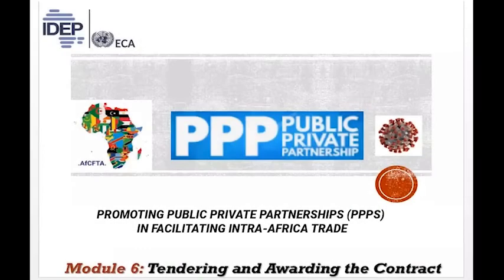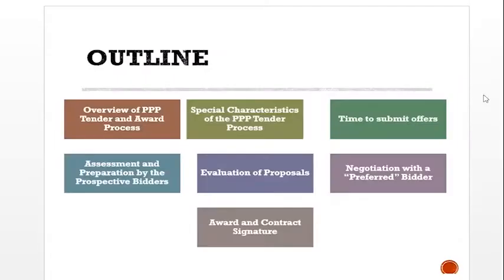Module 6: Tendering and Awarding the Contracts. Outline: Overview of PPP tender and award process. Special characteristics of the PPP tender process. Time to submit offers. Assessment and preparation by the prospective bidders. Evaluation of proposals. Negotiation with a preferred bidder, award and contract signature.